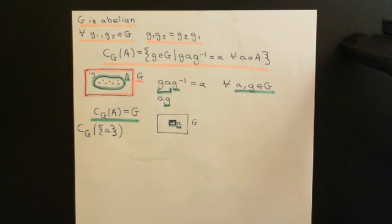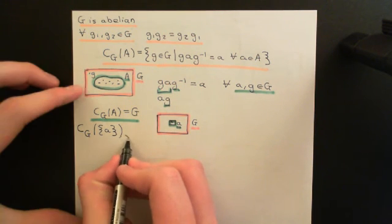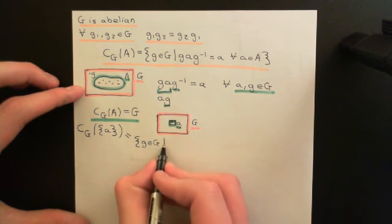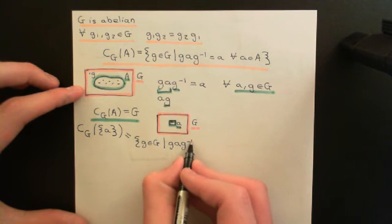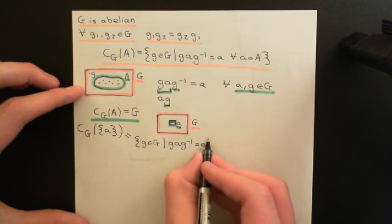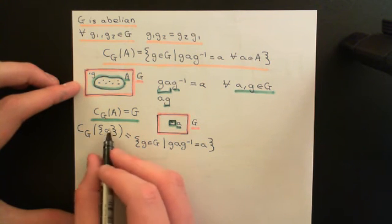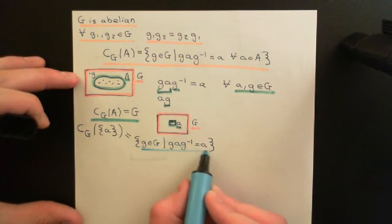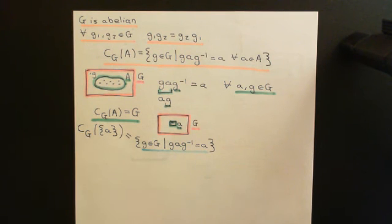Let's think about what happens to the definition of the centraliser of this subset in the group G when the subset contains only a single element. The definition becomes: all elements little g in capital G such that when I conjugate little a by little g — so g·a·g⁻¹ — this equals little a. I don't need to add 'for all little a in capital A' because there is only one element in this set, and that is little a.